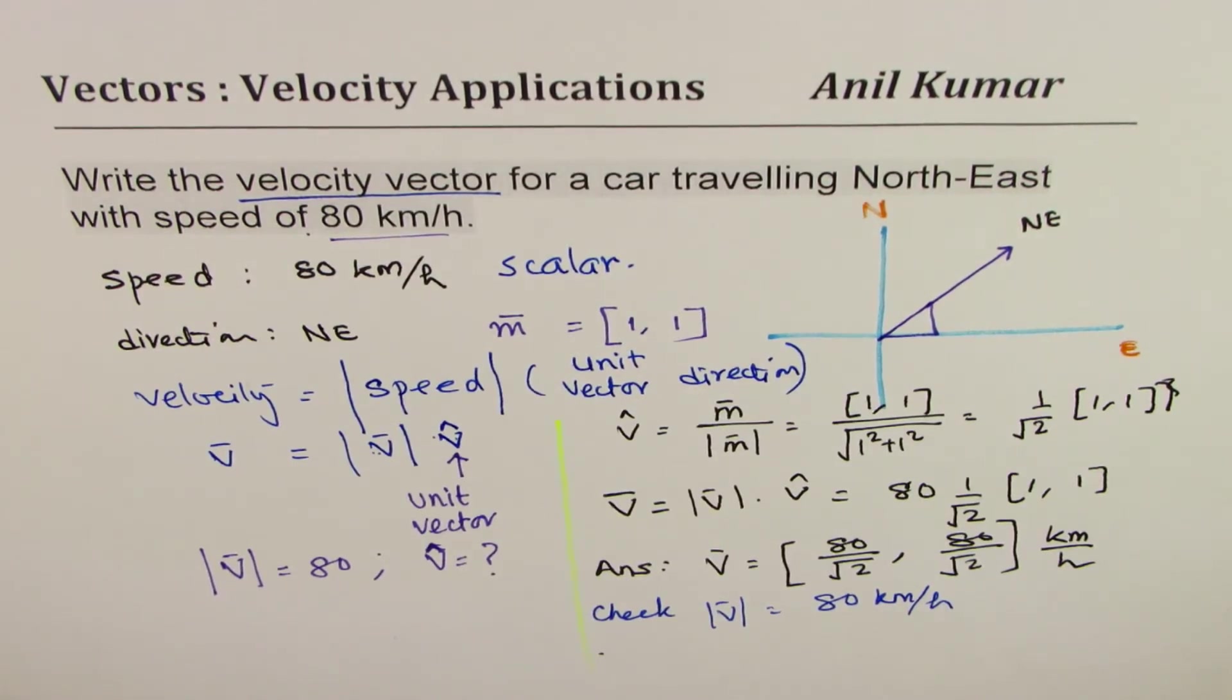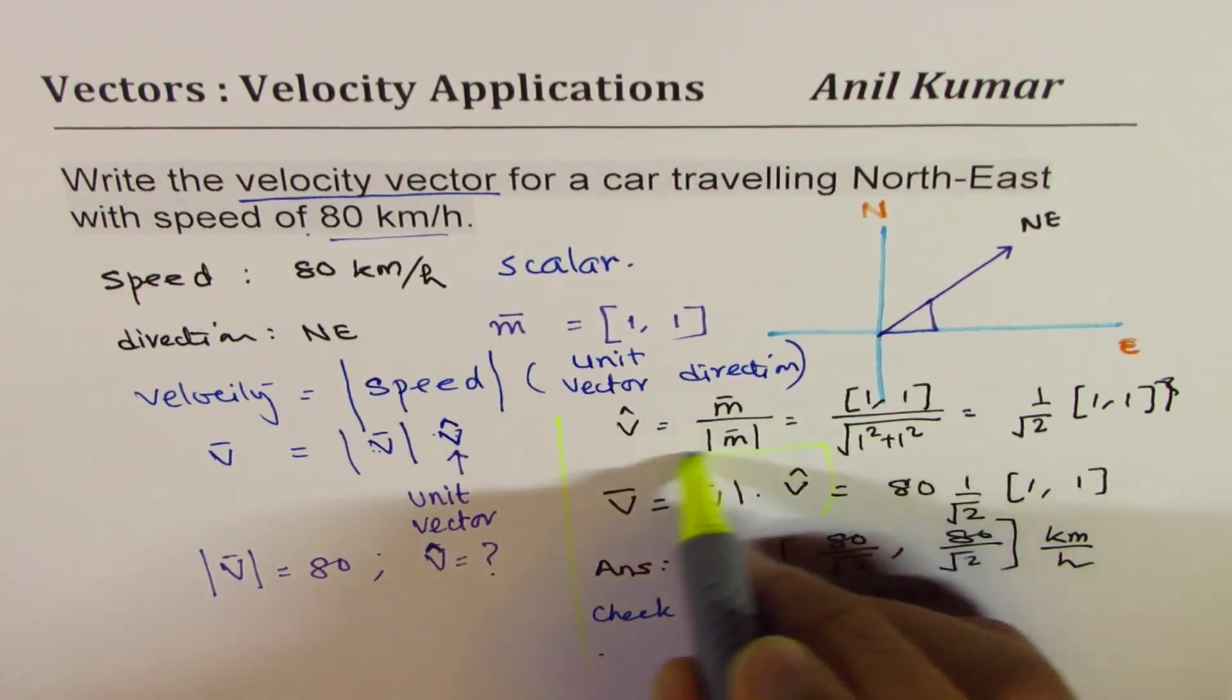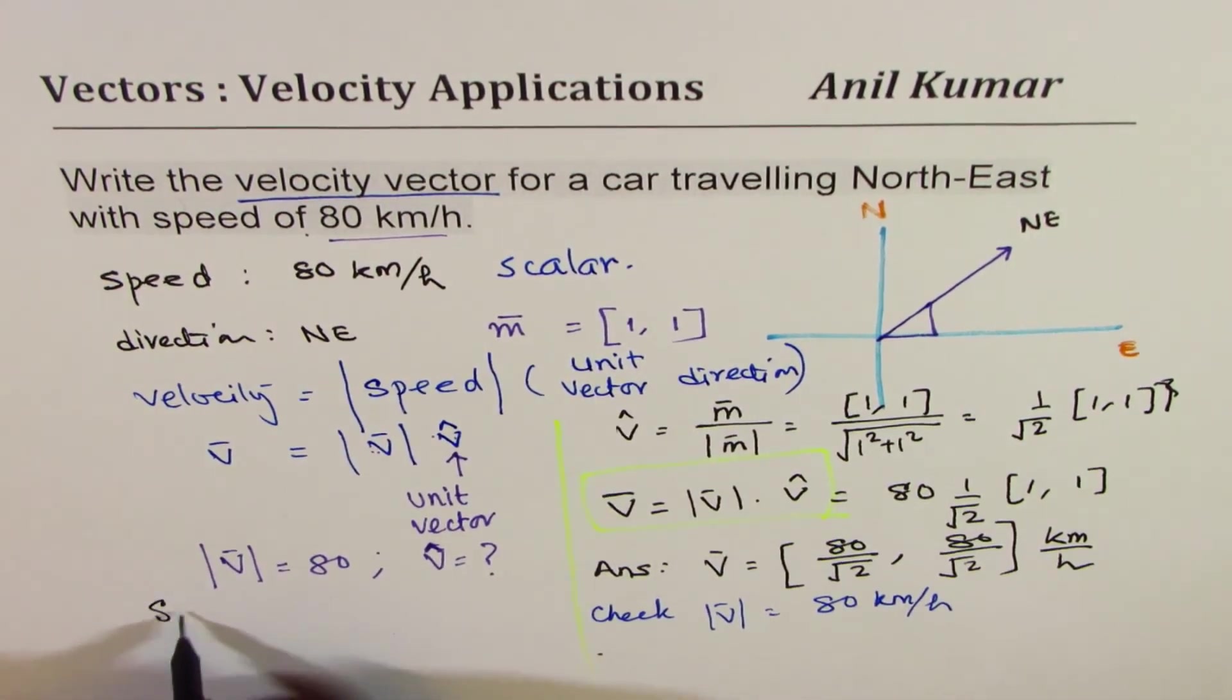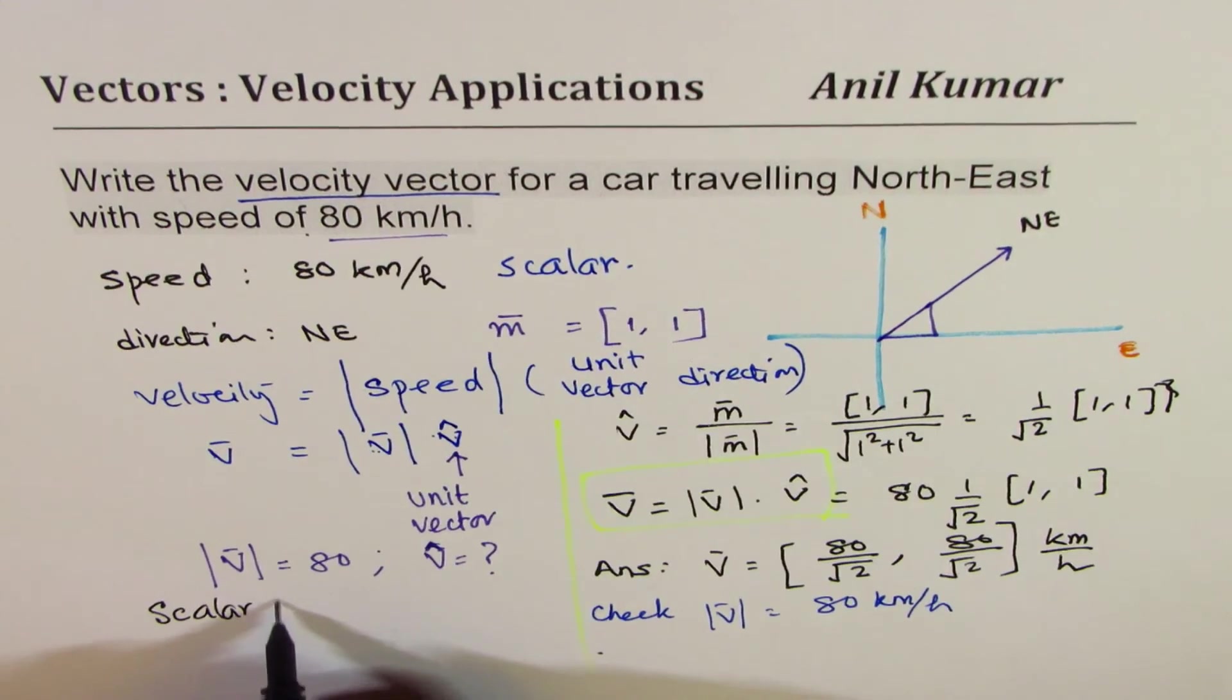So if you are given magnitude and some direction, you find a unit vector in that direction and write down the vector as a combination of scalar multiple. So what we have learned here is we have learned concept of scalar multiple of vectors to get the answer.